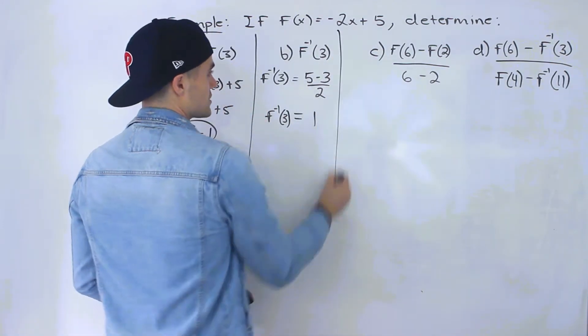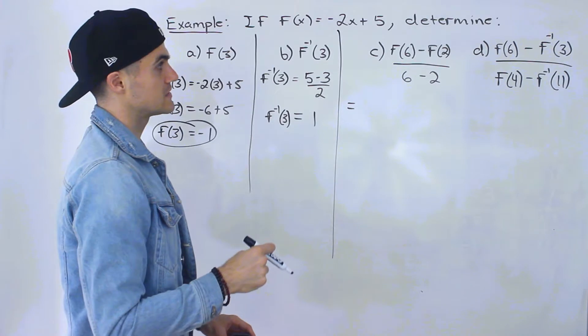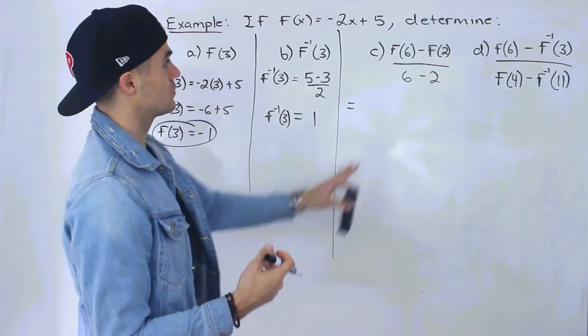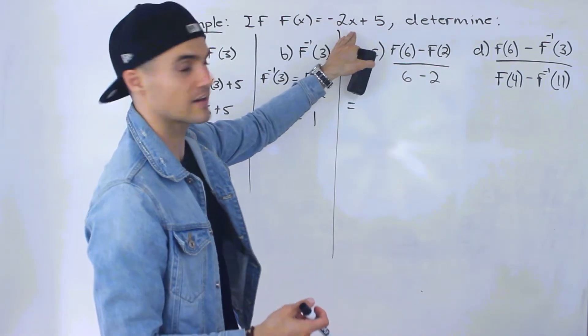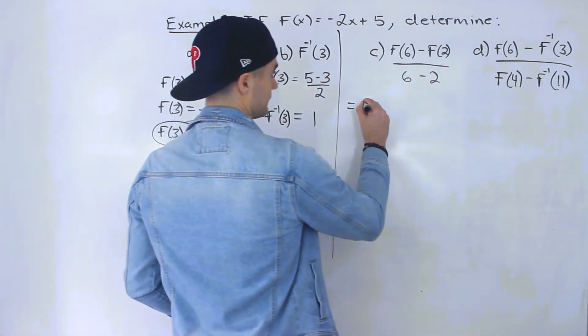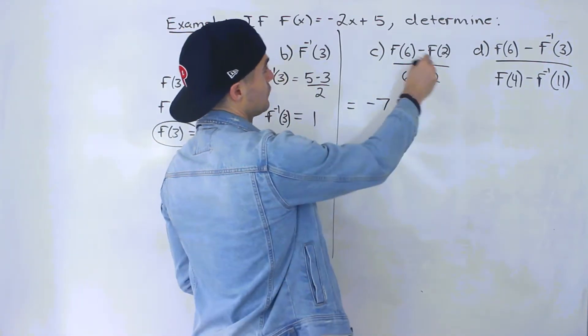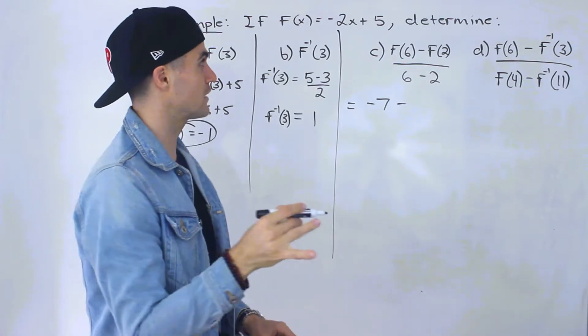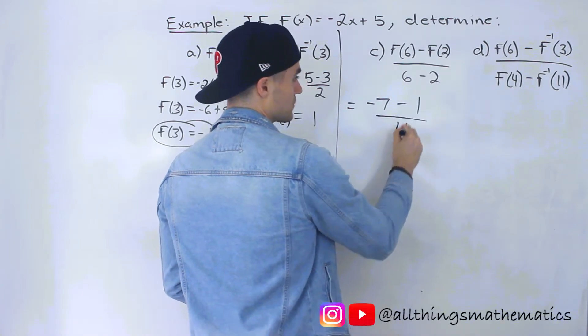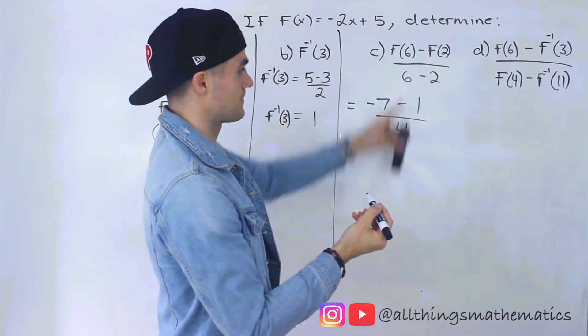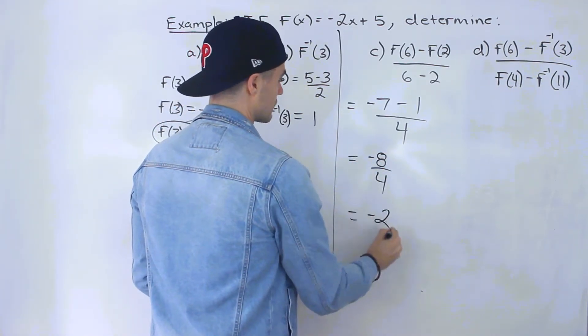And then part c, we have a more complex expression. So we have [f(6) - f(2)]/(6 - 2). So for this, we would plug in 6 into the function for the x value. So -2 times 6 is -12 plus 5 gives us -7. And then we'll have minus, if we plug in 2 for the x value, we'll have -2 times 2, which is -4, plus 5, which is 1. So we'll be subtracting 1. And then 6 minus 2, that's just 4. Notice that these are just integers. So we'll have -8/4, which would give us -2.